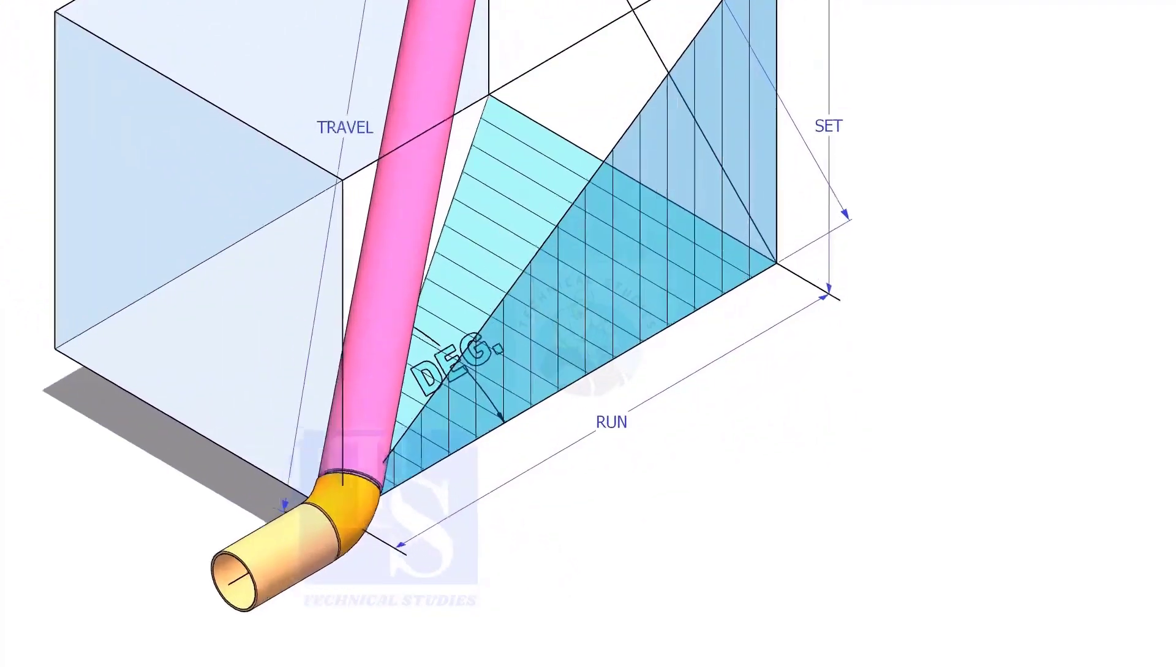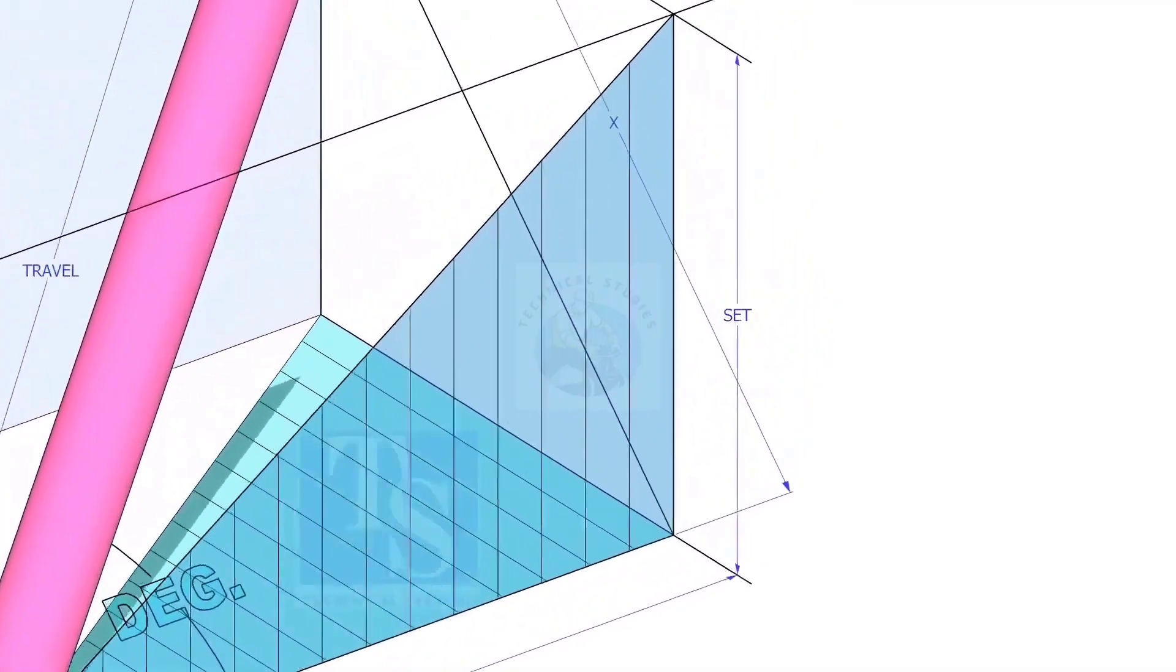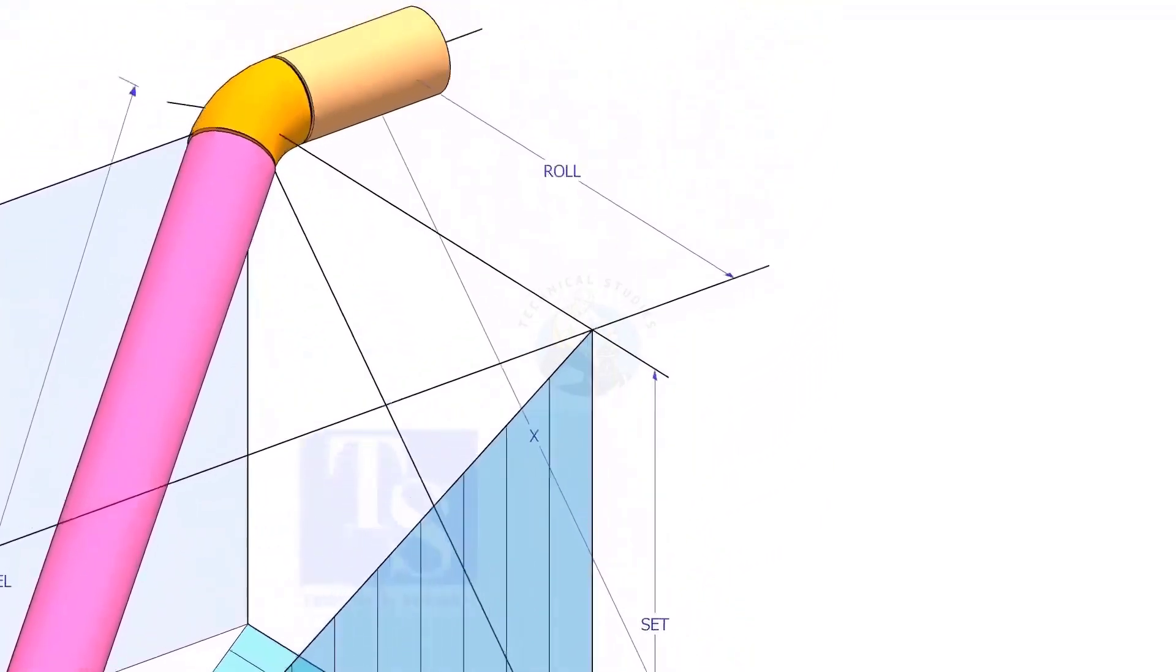In this video, I will show you how to calculate the travel length and the including angle of a double rolled offset pipe.